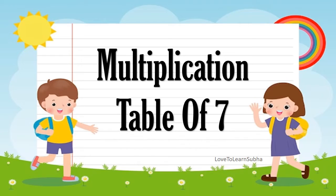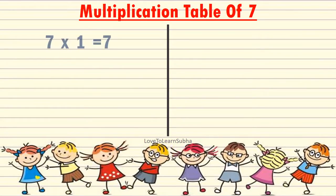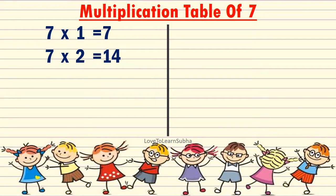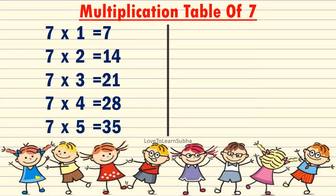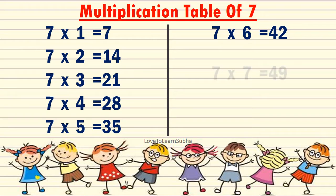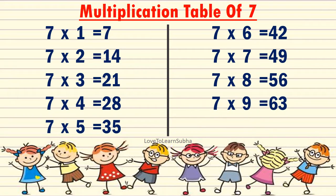Multiplication table of 7. 7 1's are 7, 7 2's are 14, 7 3's are 21, 7 4's are 28, 7 5's are 35, 7 6's are 42, 7 7's are 49, 7 8's are 56, 7 9's are 63, 7 10's are 70.